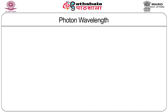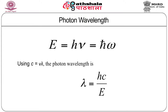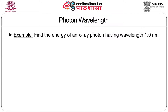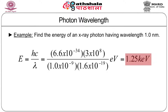What is the relation between the energy and wavelength of a photon? The energy of a photon is E = hν = ℏω. Equivalently, λ = hc/E. This is the energy-wavelength relation for a photon. For example, find the energy of an X-ray photon with wavelength 1 nm. We calculate E = hc/λ, and the result is 1.25 kilo-electron volts. Energy is always measured in electron volts.